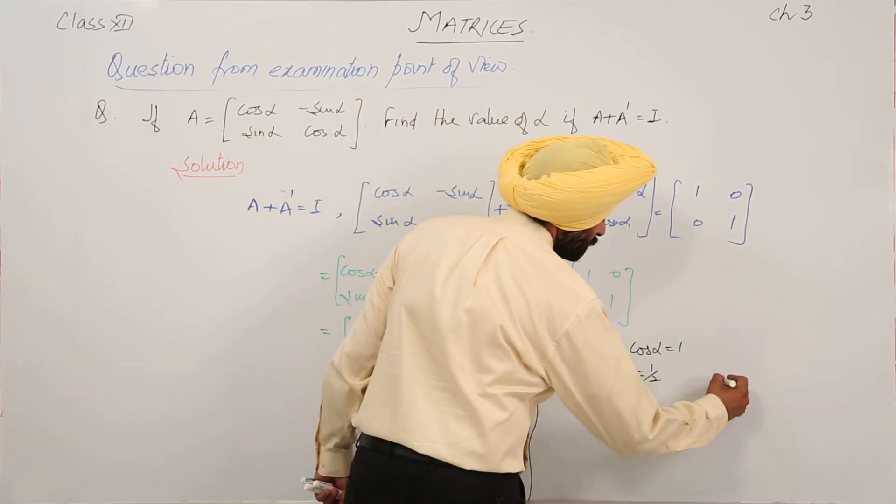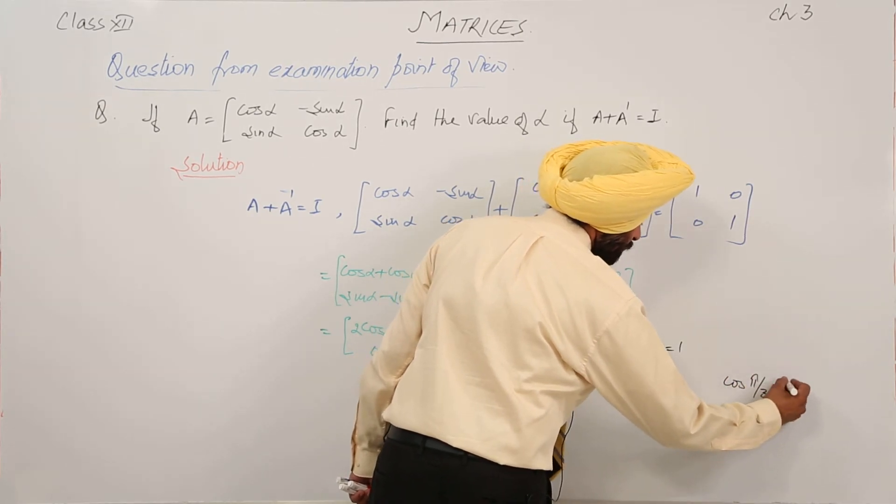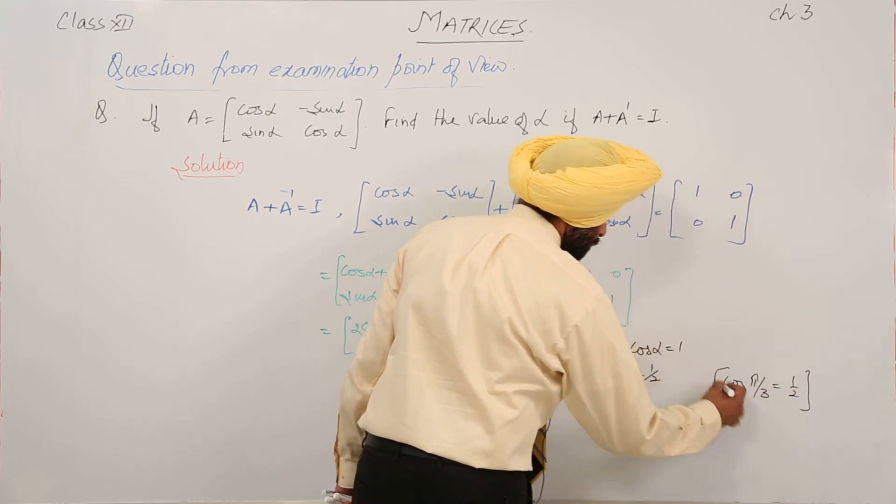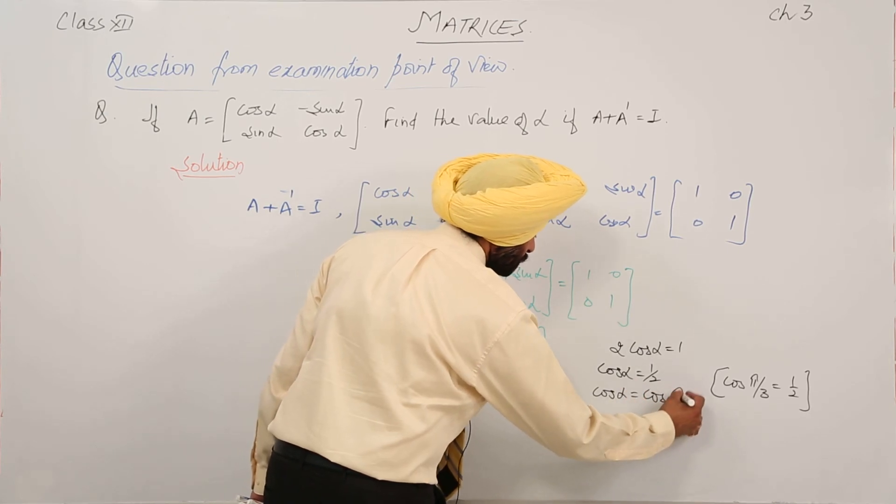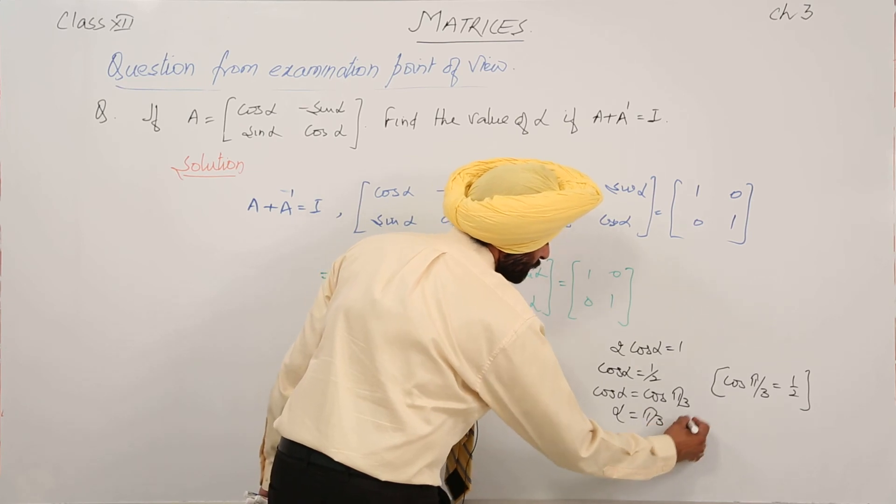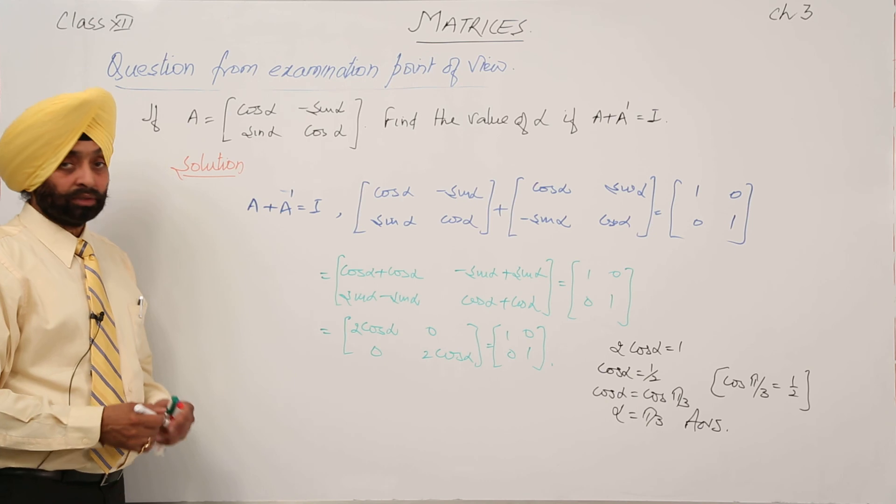So we can write: cos pi by 3 equals 1 by 2. Therefore, cos alpha equals cos pi by 3, so alpha equals pi by 3. This is the answer. Simple question.